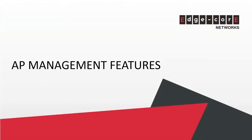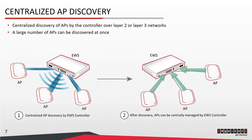Now that we have covered the basic concepts of Edgecore's AP management, we're going to talk about the features supported in AP management in more detail. When deploying a wireless network with hundreds of access points, it would be very inefficient if one has to add each AP to the management list on the controller. To simplify network deployment, Edgecore's controller has the ability to perform centralized discovery of APs. The APs can be on the same layer 2 network as the controller's LAN, in which case the controller can discover the APs based on layer 2 broadcasts. Or, the APs and the controller can be routable over a layer 3 network, in which case just fill in the subnet of the APs for the controller to discover them.